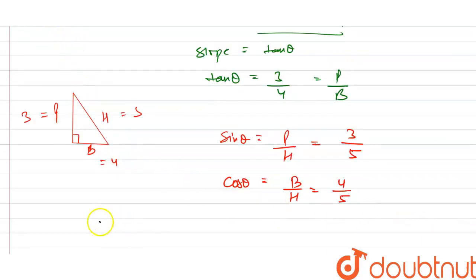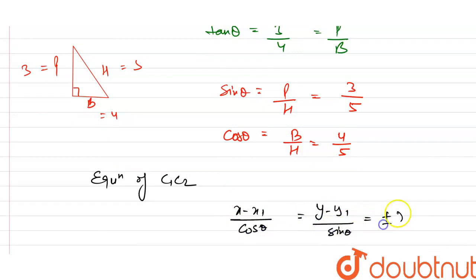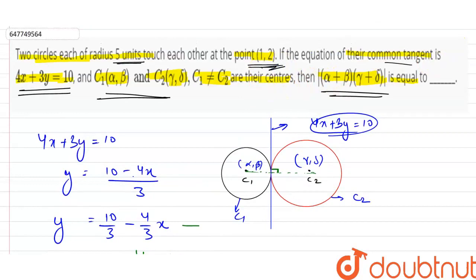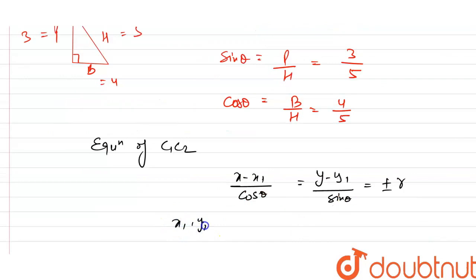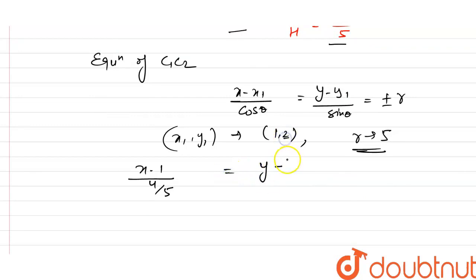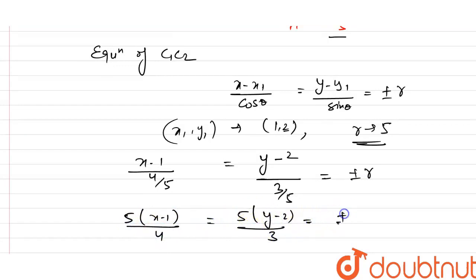C1 और C2 की equation general form में: (x − x1) / cos θ = (y − y1) / sin θ = ±r, जहाँ r radius है। Point (x1, y1) = (1, 2) दे रखा है और radius = 5। So, (x − 1) / (4/5) = (y − 2) / (3/5) = ±5। इसका मतलब: 5(x − 1)/4 = 5(y − 2)/3 = ±5।